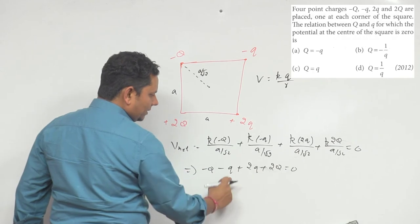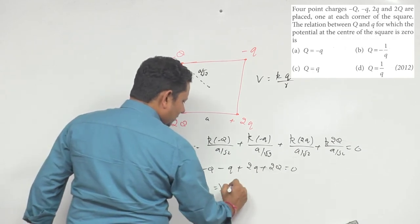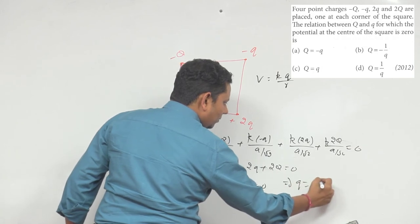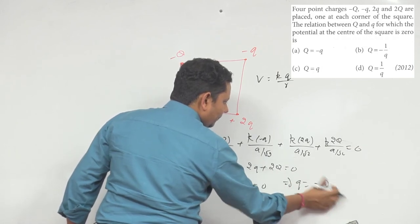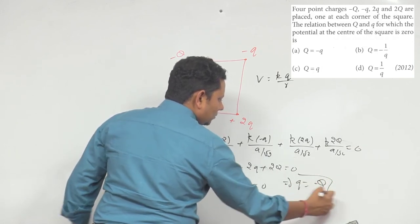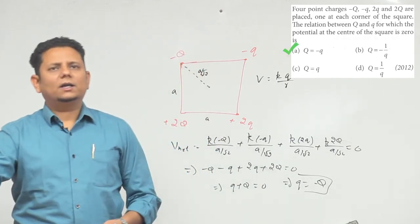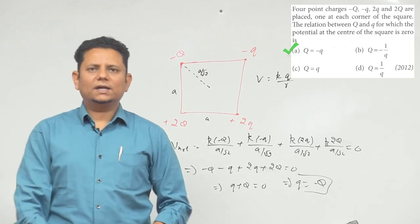Minus capital Q plus capital Q equals zero, which implies small q will be equal to minus capital Q. That will be the right answer. Based on this, option number A, capital Q equals minus small q, would be the correct choice.